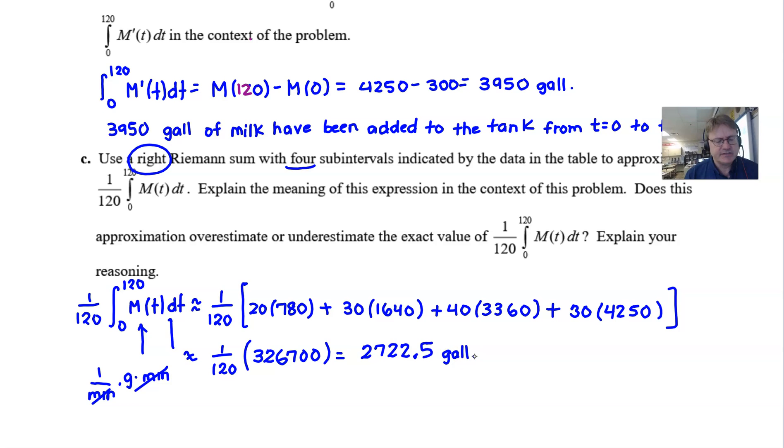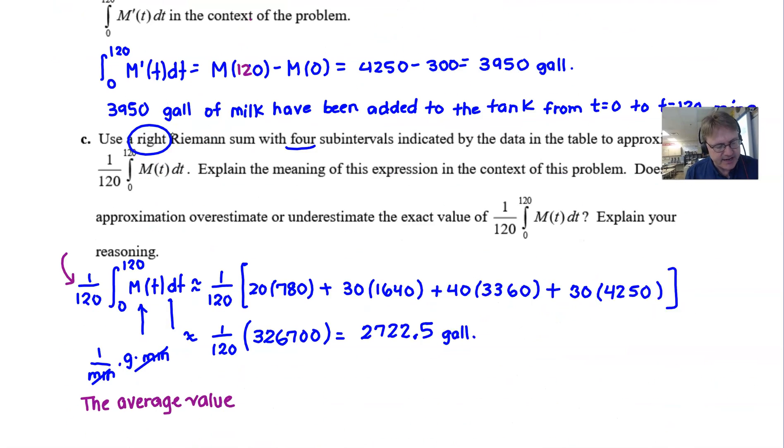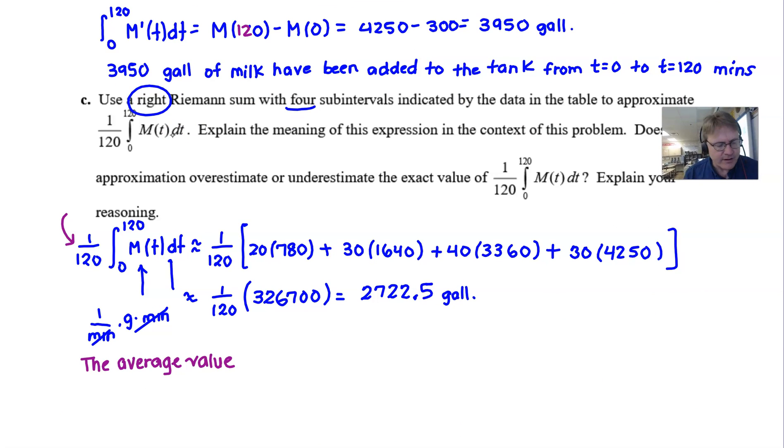But the interpretation is really where the key is because this is going to be truly what the 8.1 topic is all about. And the fact that we have a 1 over b minus a in front of our integration from a to b, which means this is the average value. Okay, well that's good to know, it's the average value. Average value of what? Well, it's the average value of the function M. M stands for the amount of milk going into the storage tank. So the average value, or how about we say the average number of gallons...